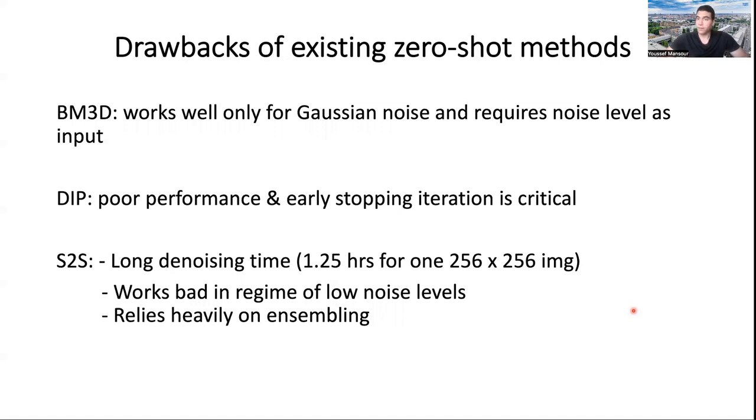Last thing, it relies heavily on ensembling. Ensembling is averaging the output of several networks. So this causes a slight increase in the scores, but blurs the image slightly so you lose some details. So our goal is to have a method that reaches a good tradeoff between performance and generalization on different distributions and levels, and at the same time, be low on compute, memory, and speed.